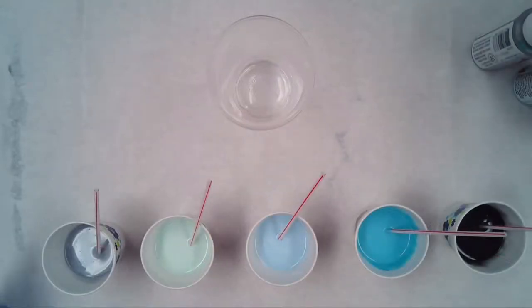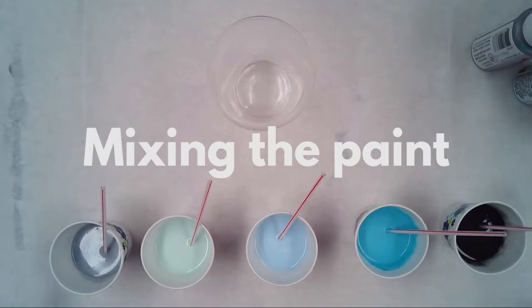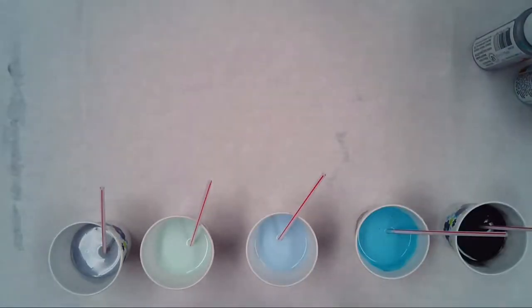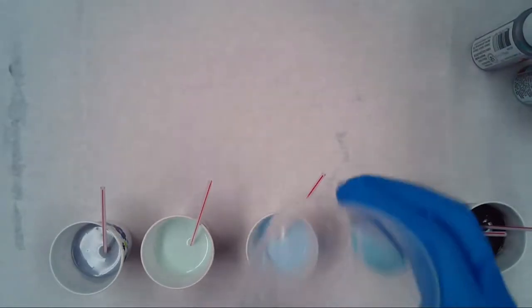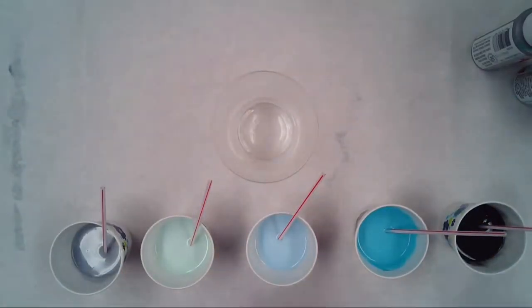Okay, so I have stirred up all the paints with the Floetrol, and now we're going to do what's called a dirty pour. There's a lot of different methods for the paint pouring, but a dirty pour is where you layer all of your colors together into one cup without mixing them, and then you pour them from the cup onto your mat.